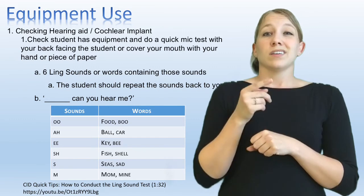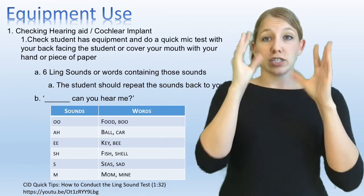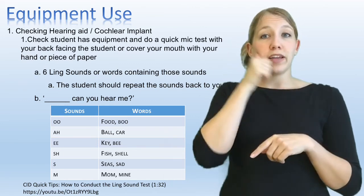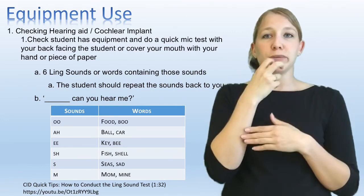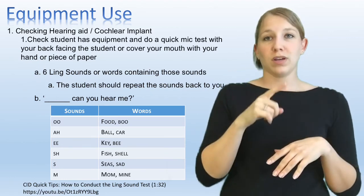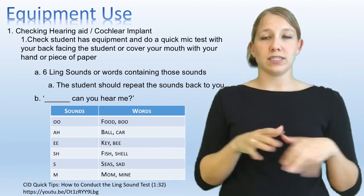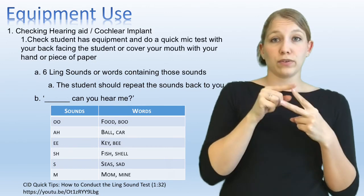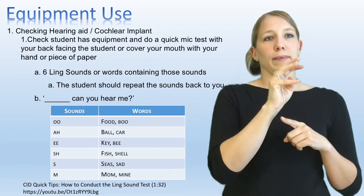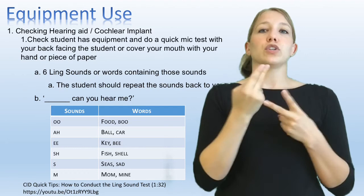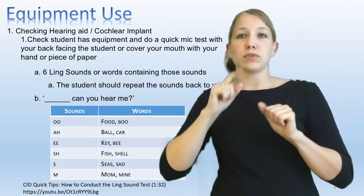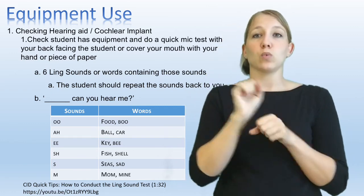Equipment use. Sometimes as a hearing general education teacher, you'll need to check their hearing aids and cochlear implants. This should happen every day to make sure the student is able to hear all speech frequency noises. There are six sounds to test for, and that test is called the Ling Six Sound Test. You can use either the sounds themselves — O, M, SH, S, E, and AH — or words that contain those sounds. You'll say those words and the student should be able to repeat them back if their equipment is working properly.